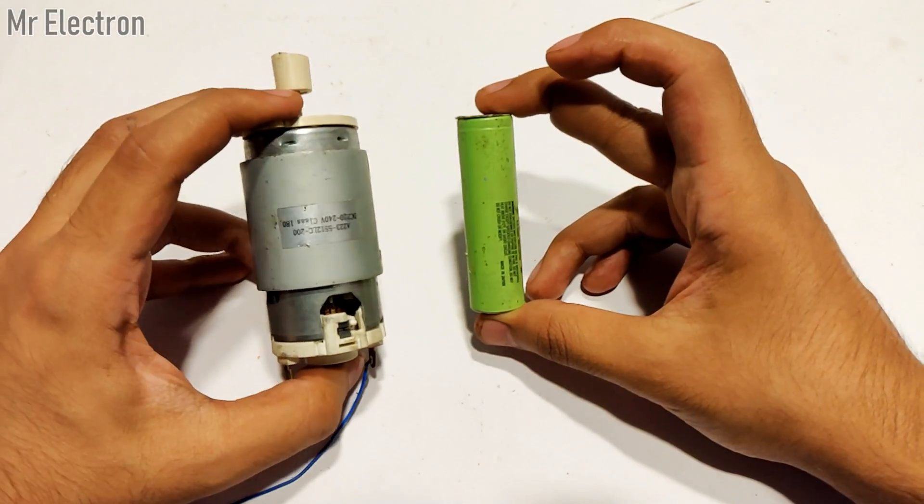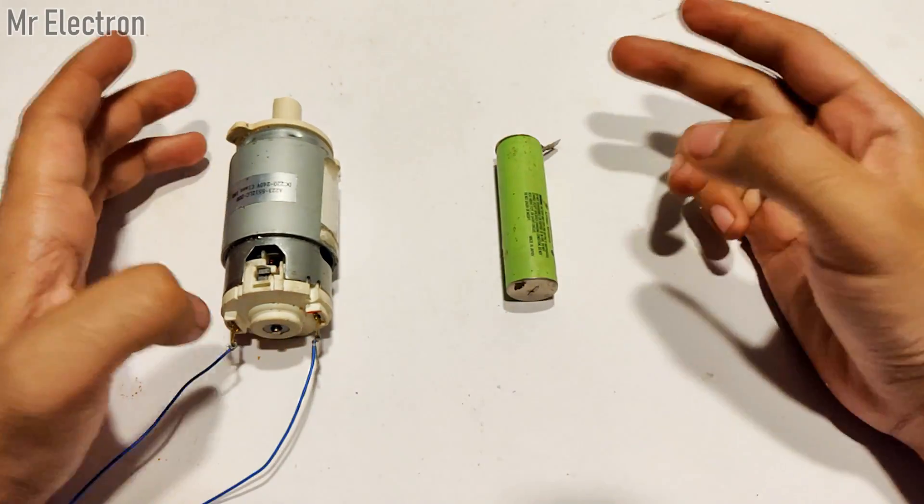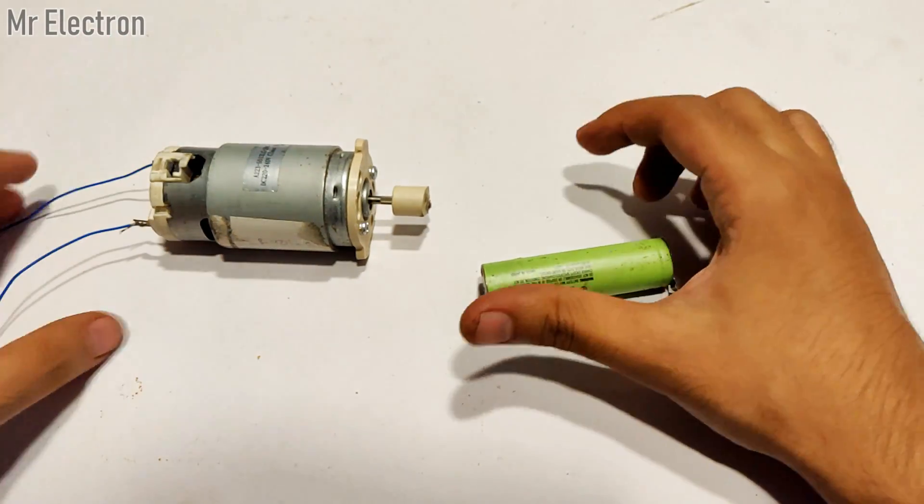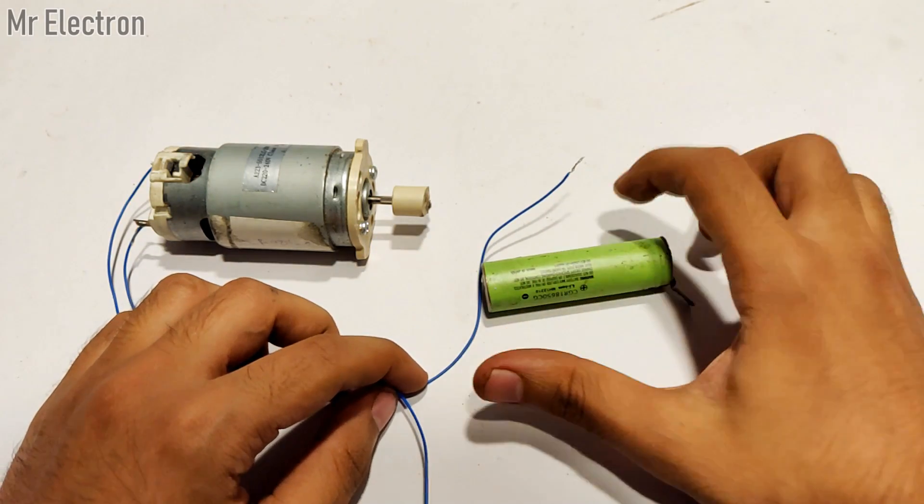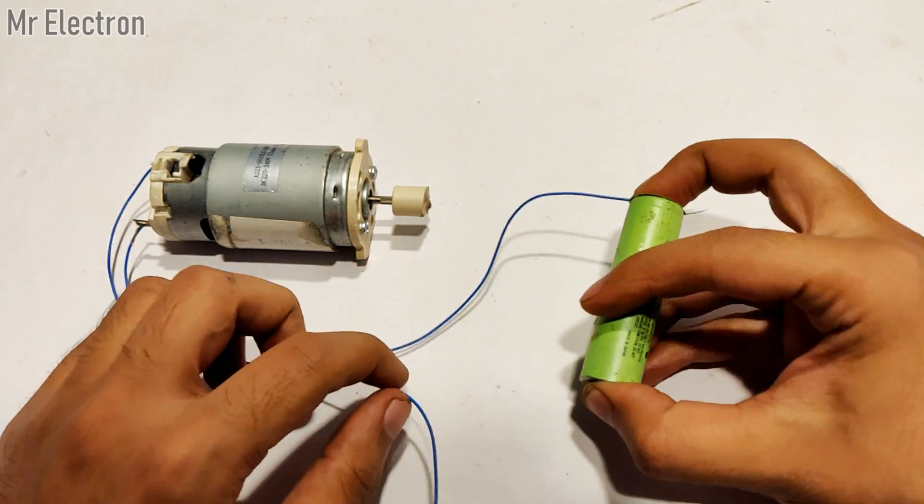Hi, today I will show you a really strange effect that I saw while making a video on running a 230-volt DC motor with a 3-volt cell. So for that, I first decided to show you that the DC motor won't work if I connected the cell directly to it.